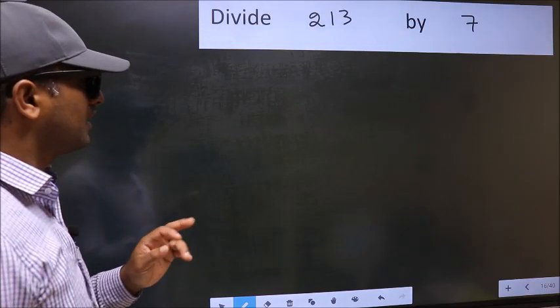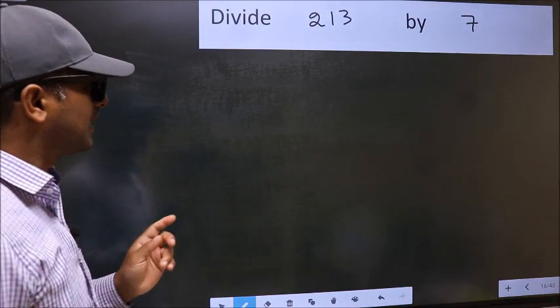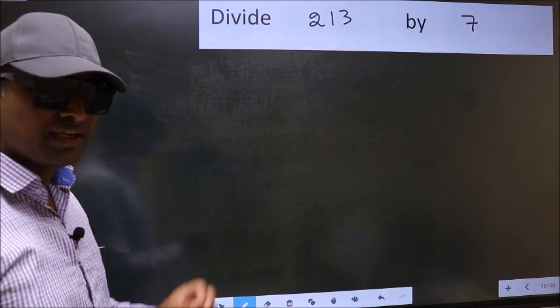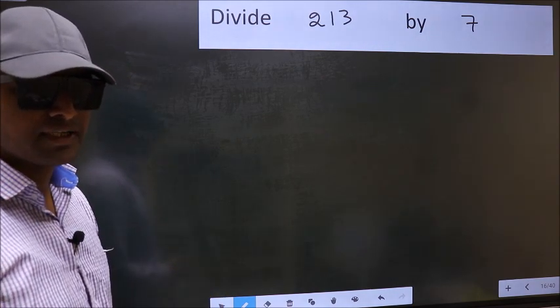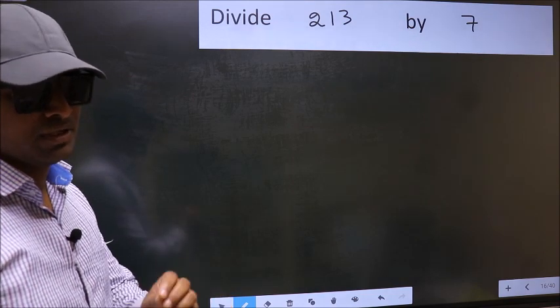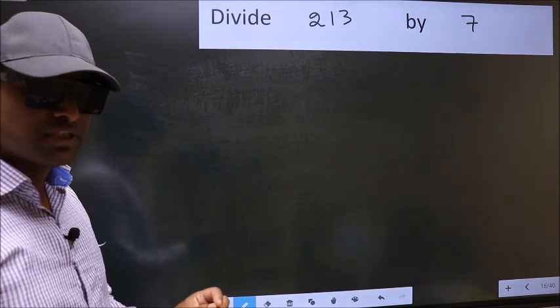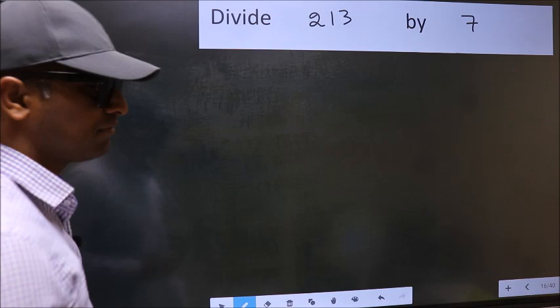Divide 213 by 7. While doing this division, many do this mistake. What is the mistake that they do? I will let you know. But before that, we should frame it in this way.